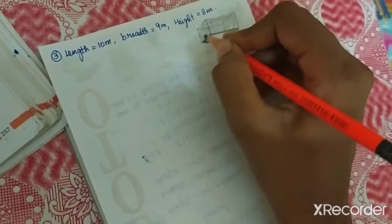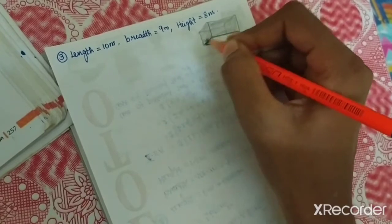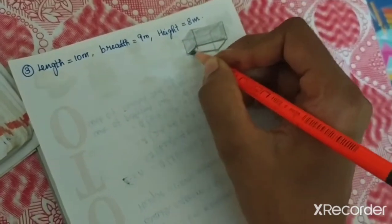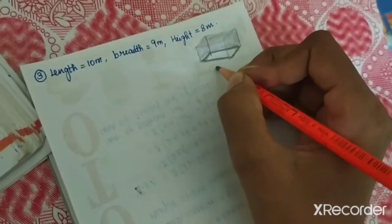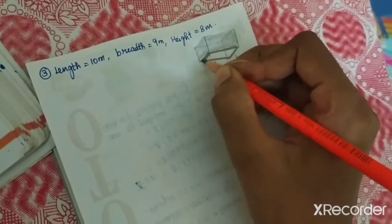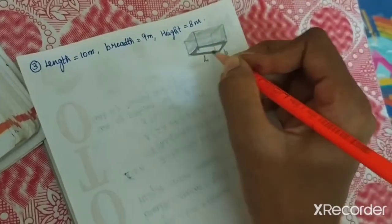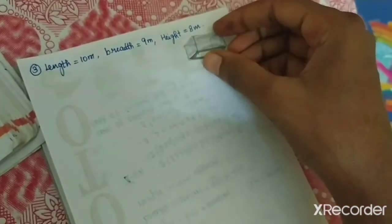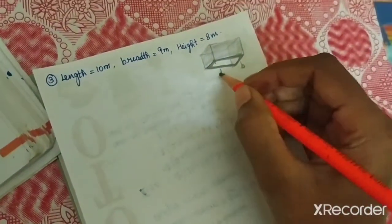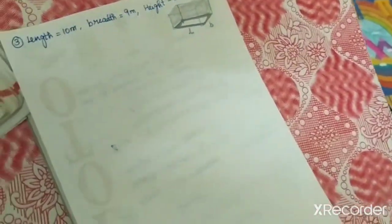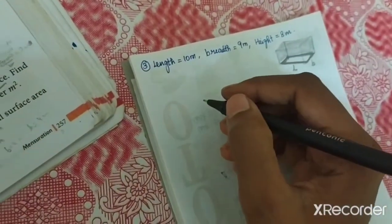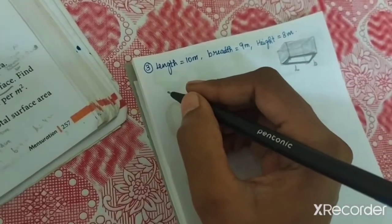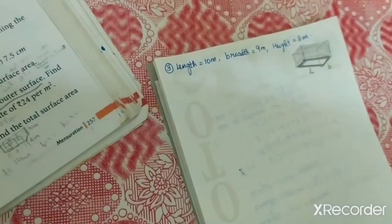This can be 5 marks. So the first question, XI 7.2. Find the TSA and LSA of cuboid whose dimensions are given. Dimensions: length, breadth, height. TSA and LSA. That is the first one.